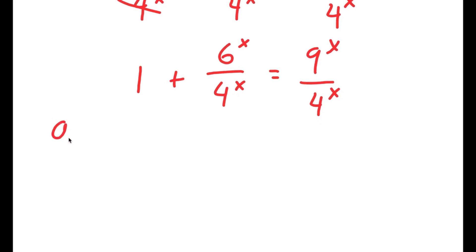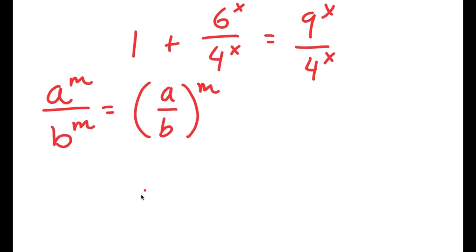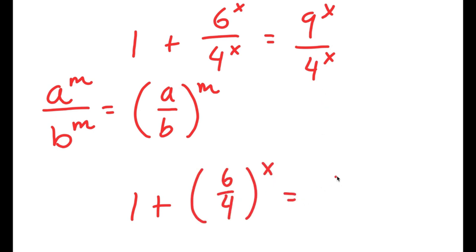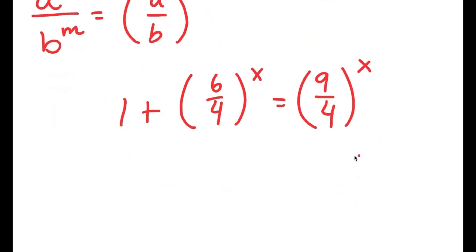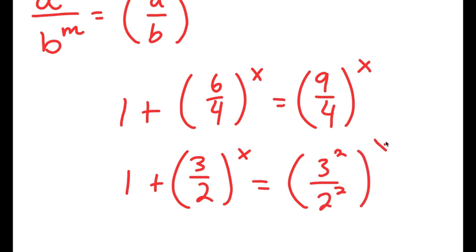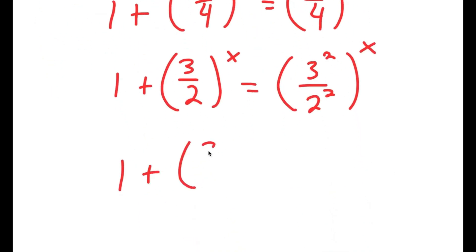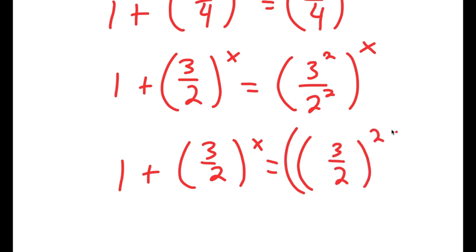Using the property that a to the power of m over b to the power of m equals a over b to the power of m, we get 6^x over 4^x equals 6 over 4 to the power of x, and 9^x over 4^x equals 9 over 4 to the power of x. Simplifying: 6 over 4 equals 3 over 2, and 9 over 4 I'll rewrite as 3 squared over 2 squared, which by the same property equals 3 over 2 squared to the power of x.